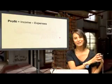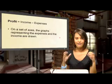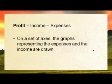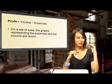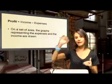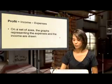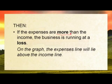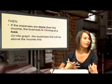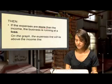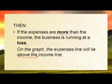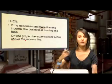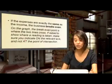On a set of axes, the graphs representing expenses and income are drawn separately. You'll have your normal x and y axes and expenses and income on different lines, so you can see where you stand with the money you're making. If expenses are more than income, the business is running at a loss — you'll see the expenses line above the income line on the graph.